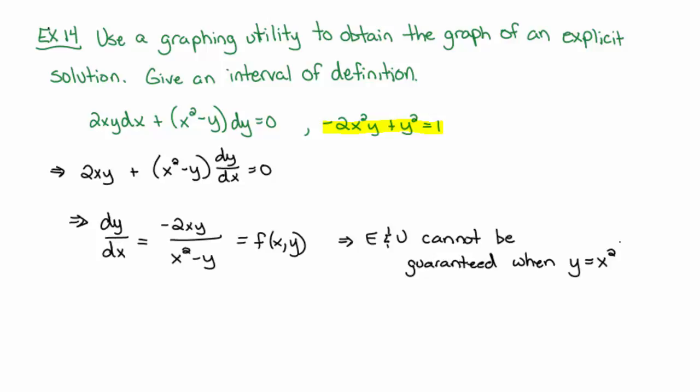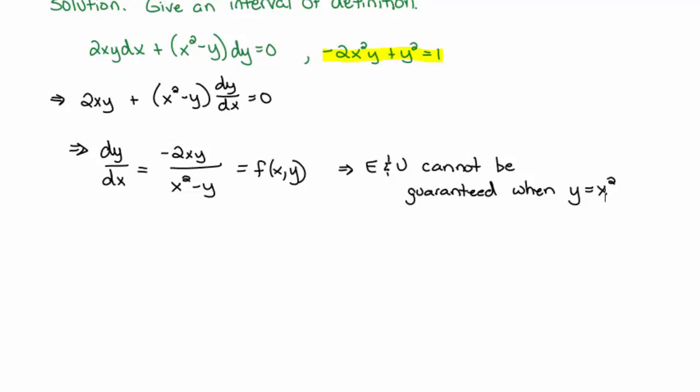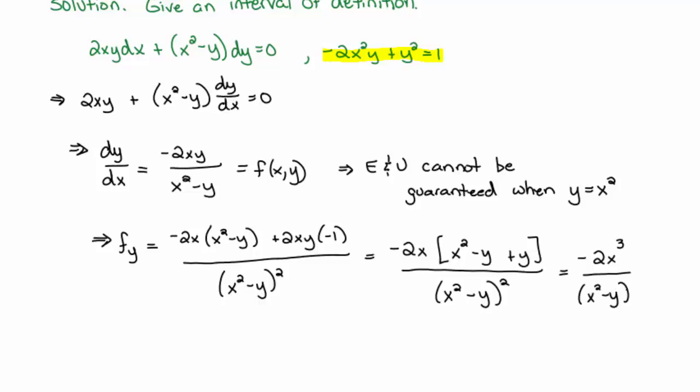But also, if we wanted to, we could find out what f sub y is. And remember, that just means holding all variables x as constants and then taking the derivative with respect to y. We get to this point using the quotient rule, and now we can simplify a little bit further. And this still leads to the same condition that existence and uniqueness is not guaranteed when y equals x squared. Again, that's not the purview of this question, but I thought it would be a neat exposition since this is an augmented lecture.